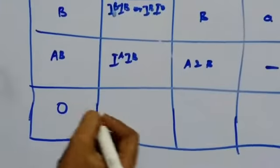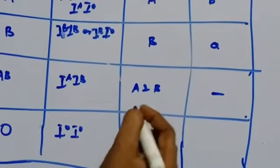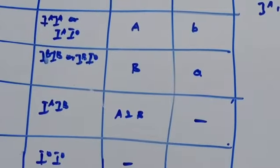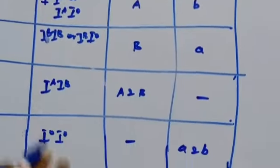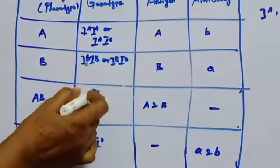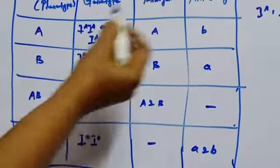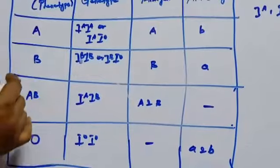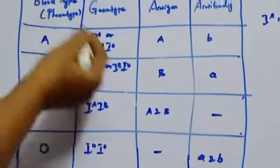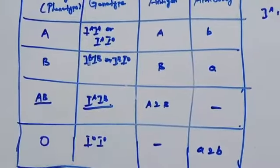The next one O group. The genotype is IO IO. Then no antigen. Both A and B antibody is found. So totally how many genotypes? Six genotypes. How many types of blood group? Four types of blood groups. A and B are co-dominant. They express both the characters.